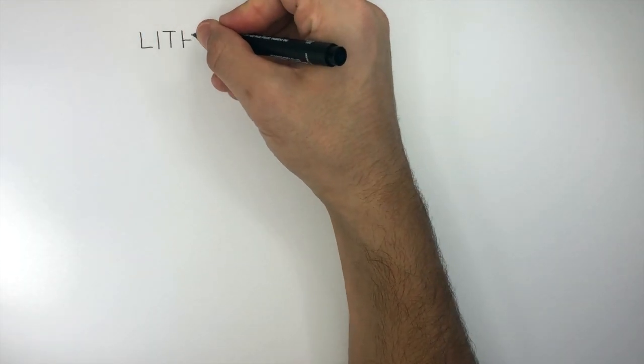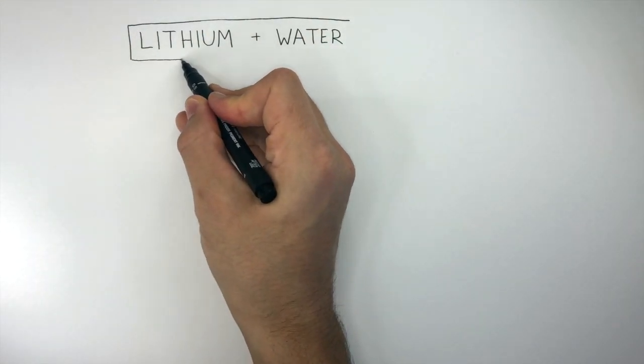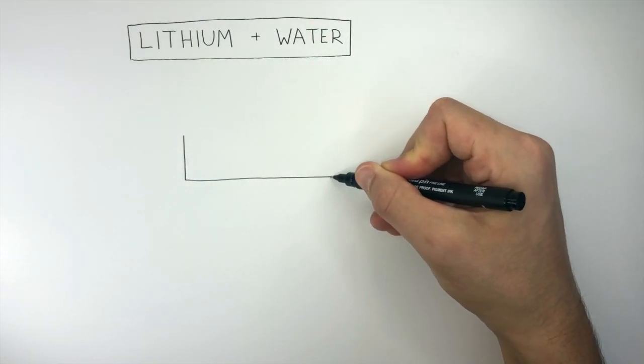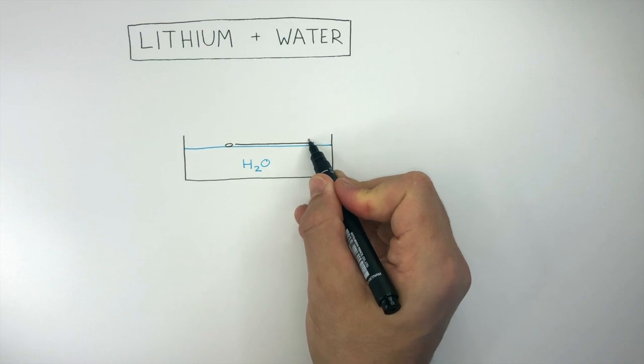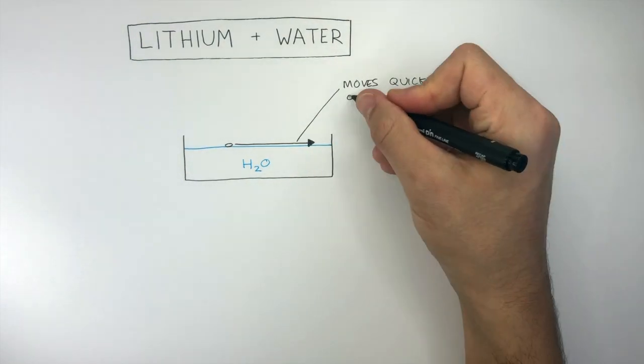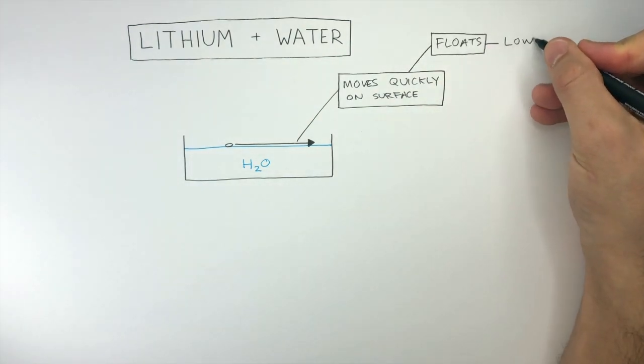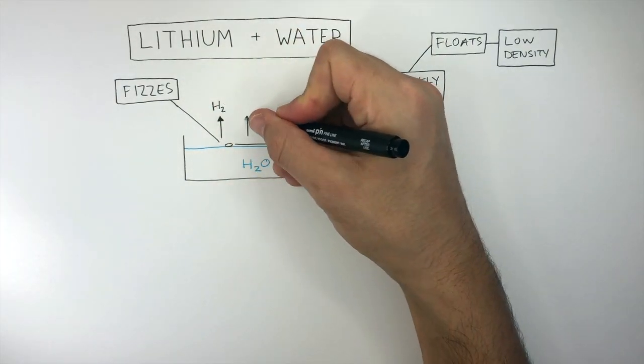The reaction between lithium and water is the least vigorous reaction out of all the group 1 metals. This is the glass trough and it is filled with water. The small piece of lithium metal is dropped into the water where it reacts very quickly. The arrow shows how the lithium moves quickly on the surface and it floats because it has a low density, lower than water.